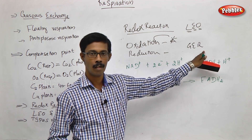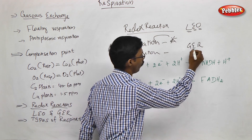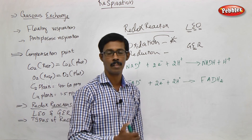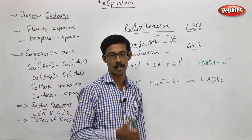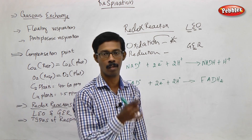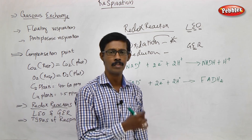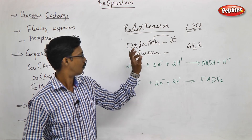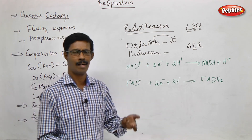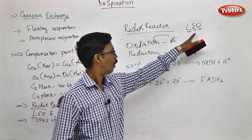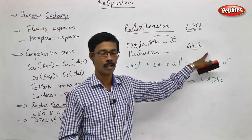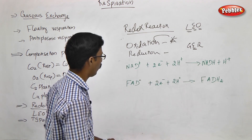Gaining of electrons is called reduction. Whenever we are talking about oxidation and reduction, we are talking about electrons. You have to define the terms oxidation and reduction with the help of electrons. Loss of electrons is called oxidation; gain of electrons is called reduction.